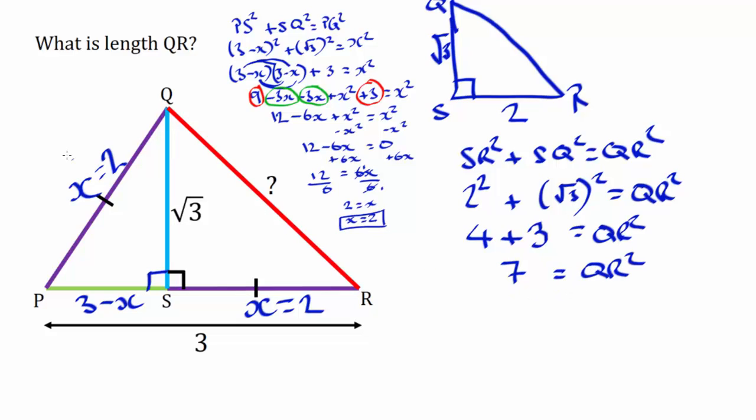So if we did the inverse of squaring, which is obviously square rooting to both sides, we finally get the answer that QR is equal to root 7. So that's the answer.